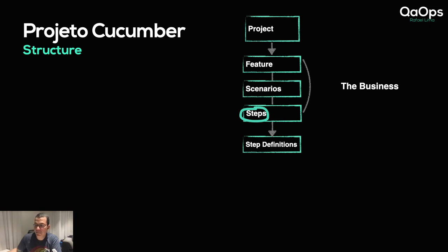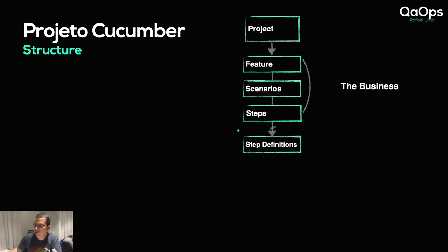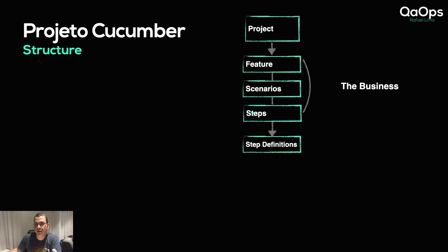Each step is going to be mapped to a step definition in the code. Now we are diving into the implementation — we are no longer in the business layer, we are starting to talk about code. We're going to have a step definition file, which is a class. A Given is going to be mapped to a method, a Then is going to be mapped to a method, and so on and so forth.